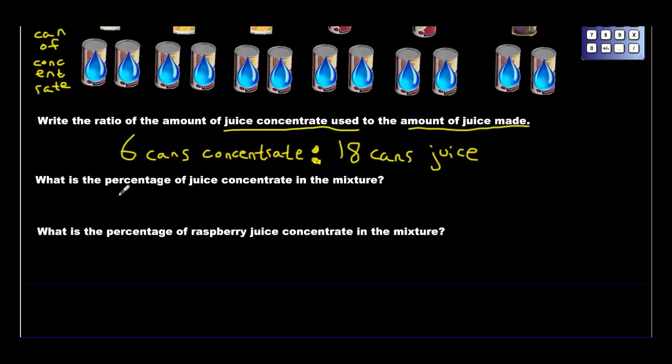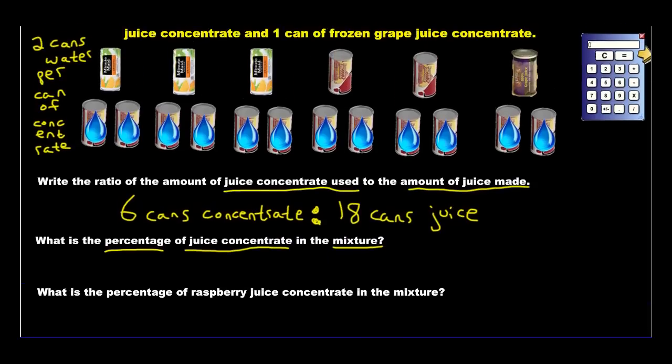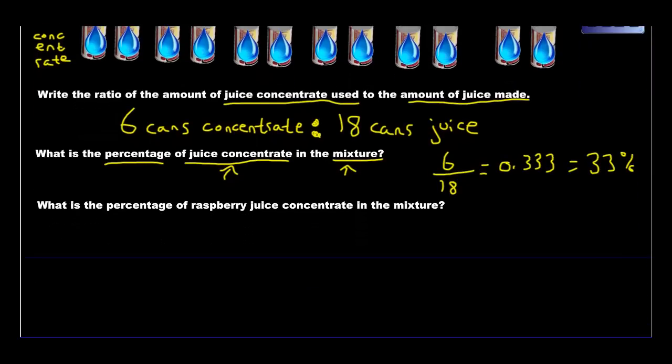Now the next part asks us to get the percentage of juice concentrate in the mixture. We know how much juice concentrate we made: 6 cans. The mixture is the total, and that's 18 cans. This is one-third, which is 0.3333. That equals 33% of the mixture is juice concentrate. So a third of it. The other two thirds are just water mixed in.